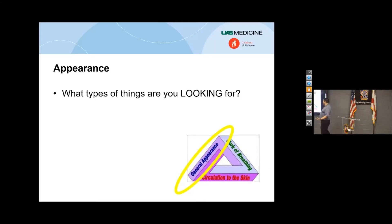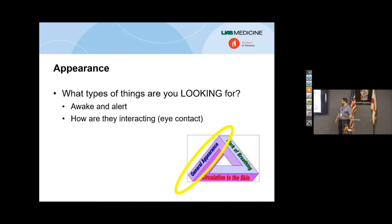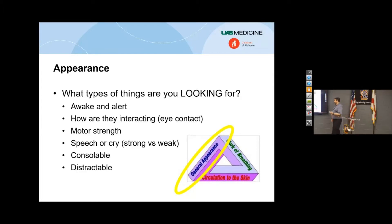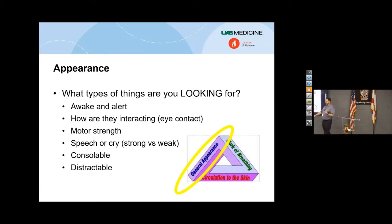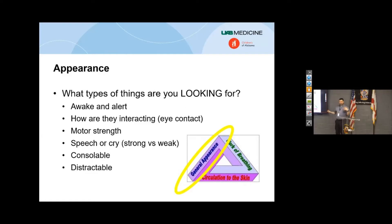The first leg of the triangle is general appearance — how is this kid looking? This is almost a from-the-door assessment. Are they awake and alert, or sleepy? Are they super fussy? Kids in pain get really fussy. Kids going into shock have a period where they're really fussy and irritable before they fall off that cliff and get really sleepy. So is the kid grumpy and fussy and won't calm down no matter what, or does mom's Paw Patrol doll make them happy? Are they weak, or kicking and screaming, or just lying there floppy like a limp noodle?